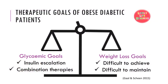What are the therapeutic goals of obese diabetic patients? The two main goals are to control blood sugar levels and body weight. Glycemic goals can be achieved through escalating insulin regimen and combination therapy of injectable and oral agents, while weight loss goals are more difficult to achieve and maintain over the long term.